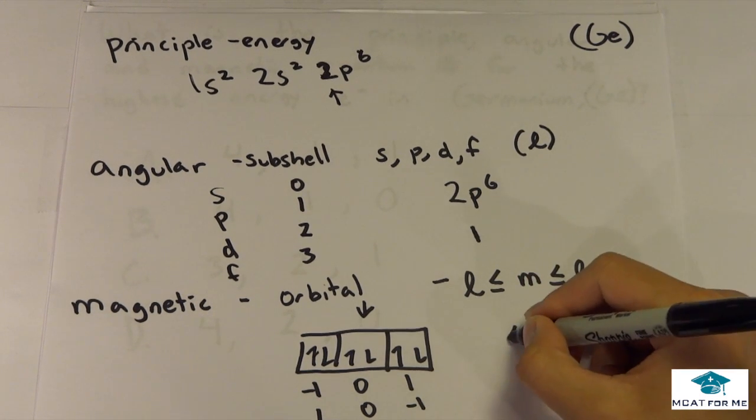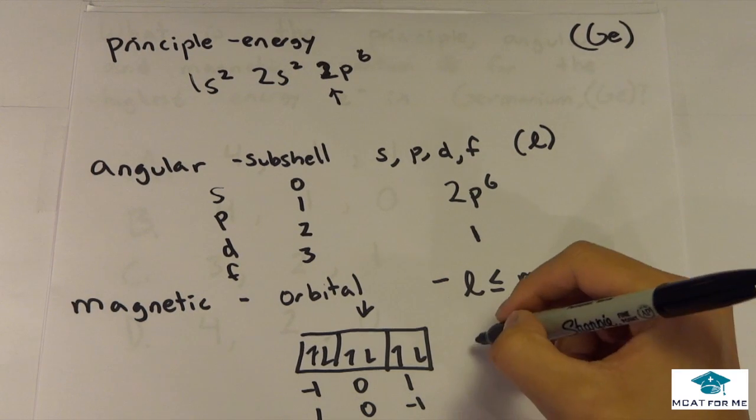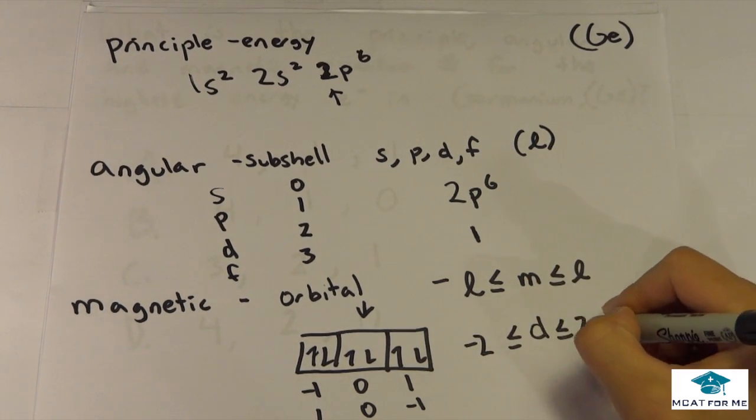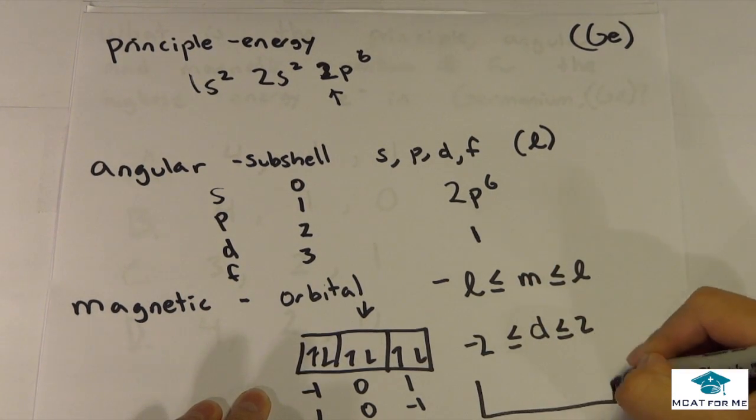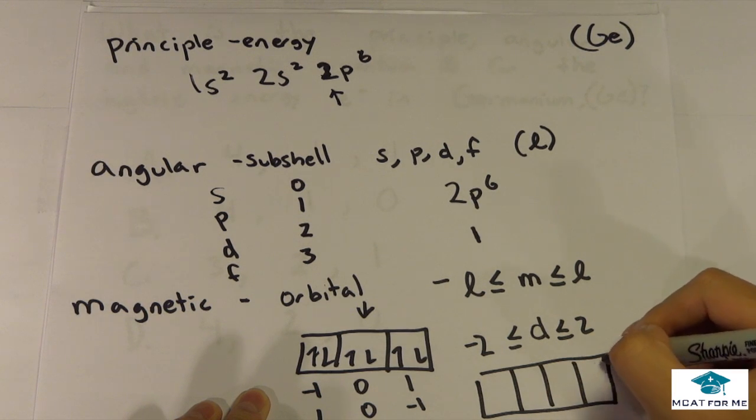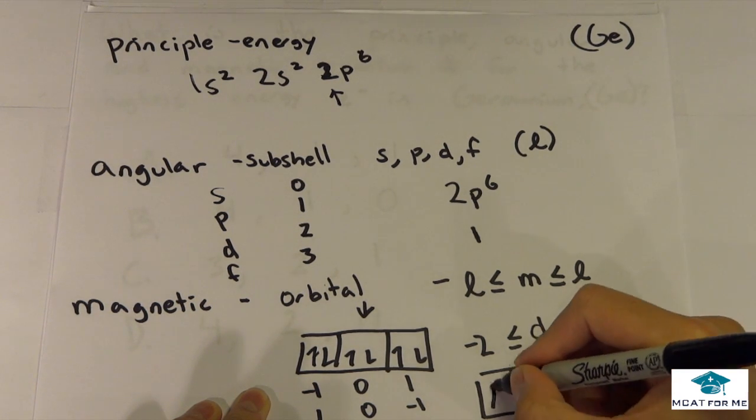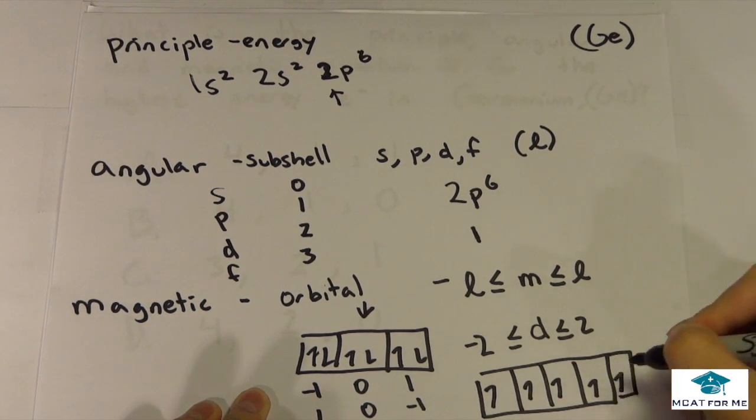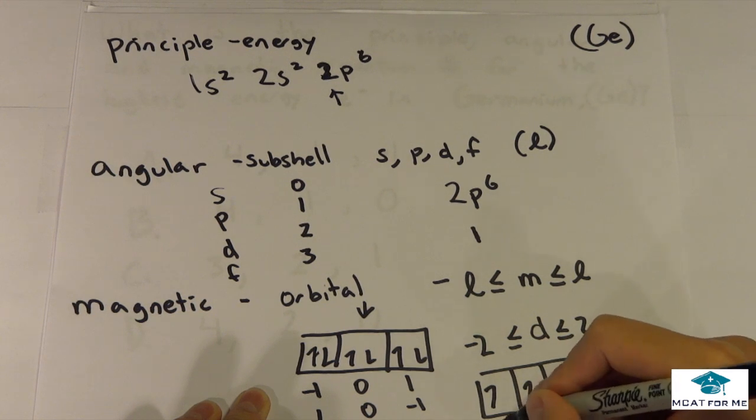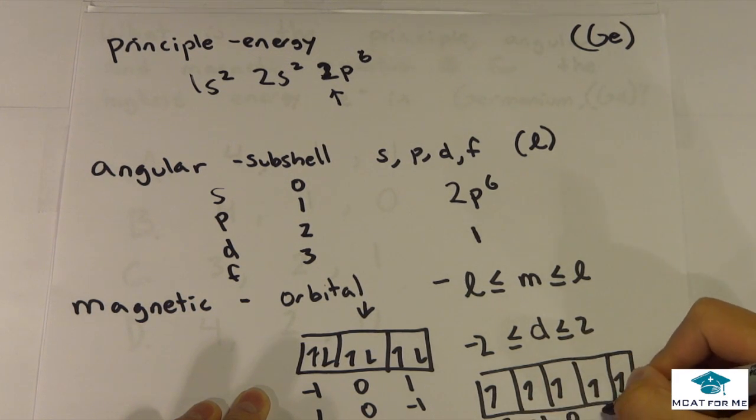So if it was a D block, the magnetic number would go from negative 2 to 2. So it could be, remember D block has 10, so 5 orbitals. It could go from negative 2, negative 1, 0, 1, and 2.